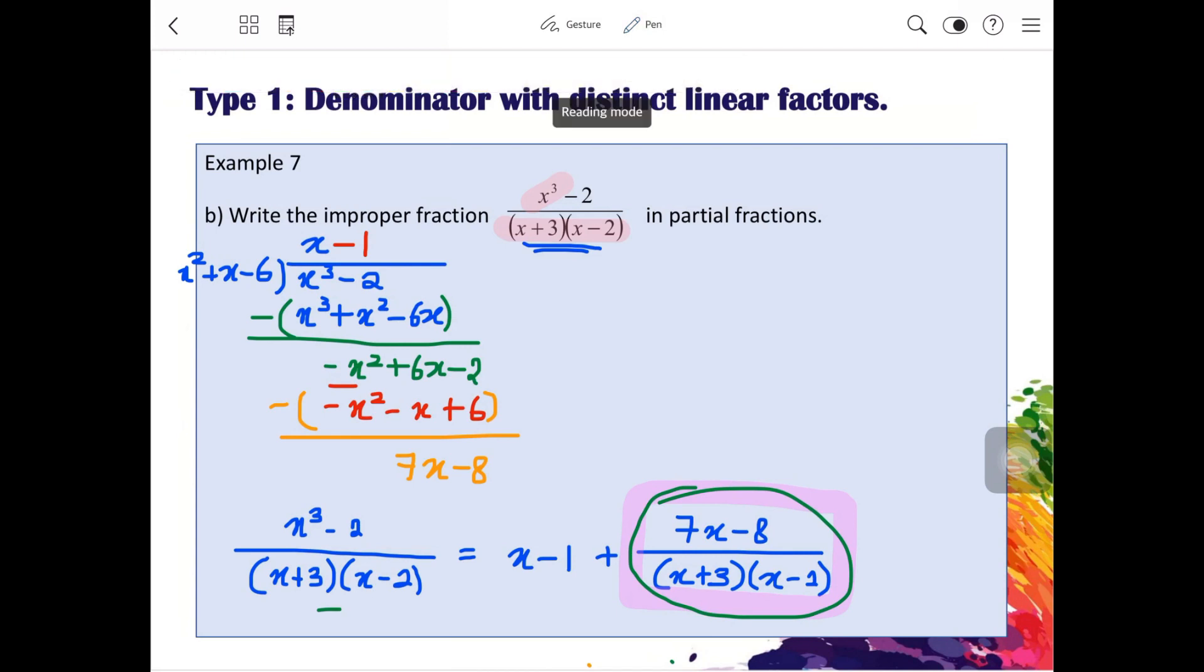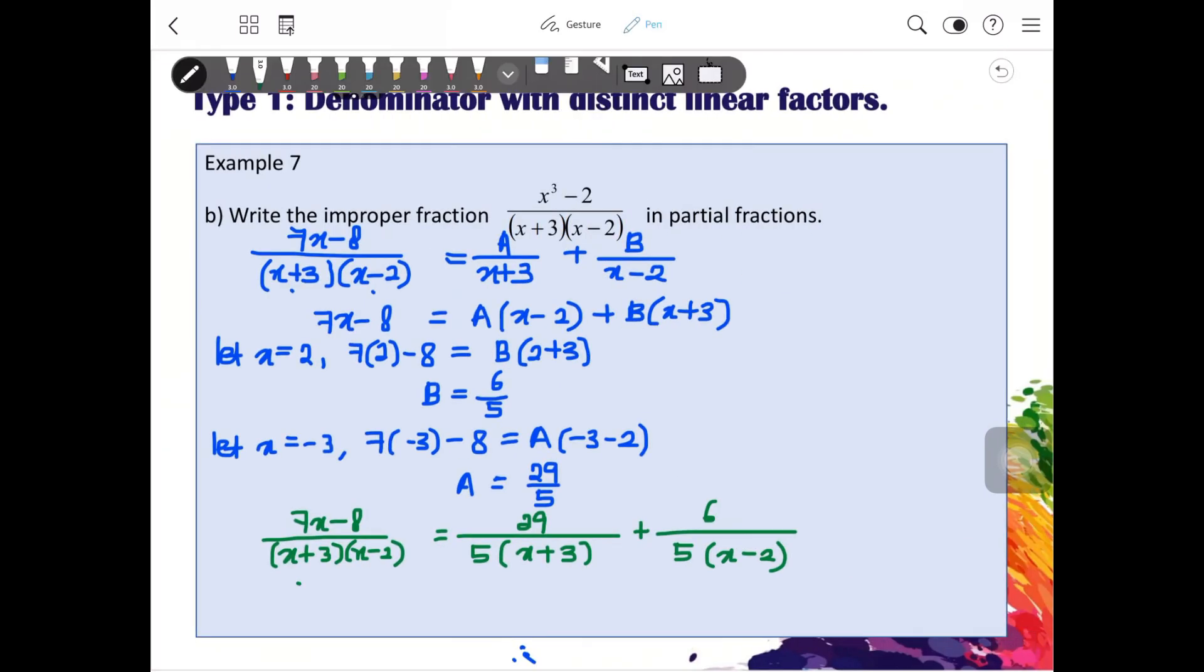We will write the final answer as x cubed minus 2 over x plus 3, x minus 2 is equal to x minus 1 plus 29 over 5, x plus 3 plus 6 over 5, x minus 2. With this, you get the final answer.